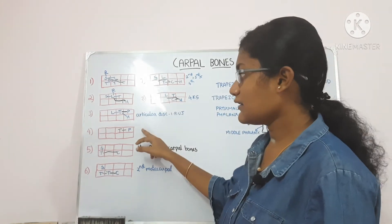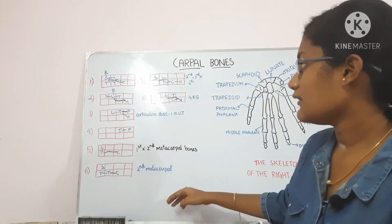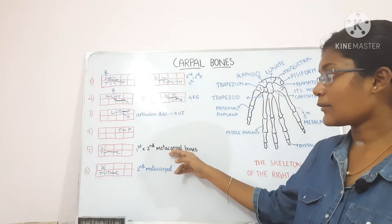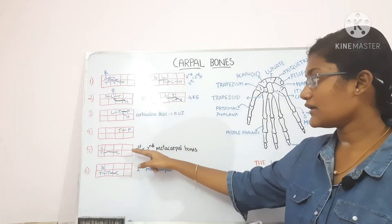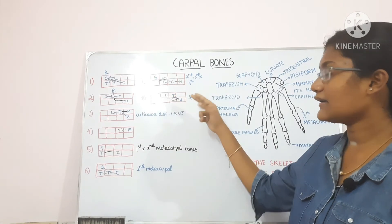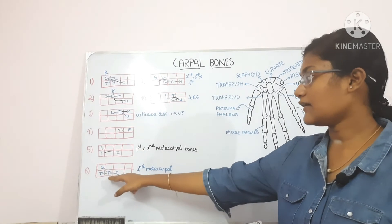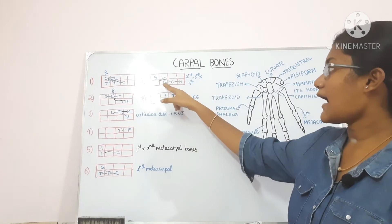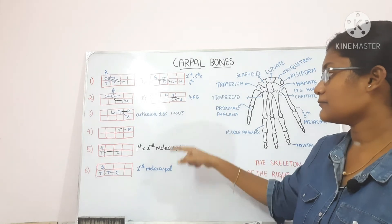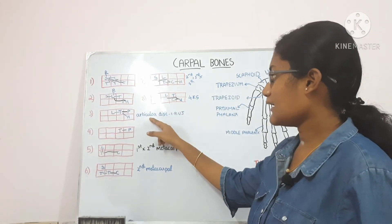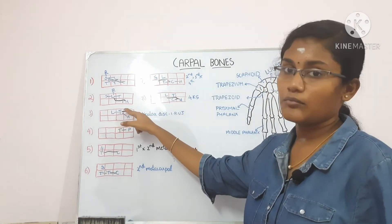The pisiform is the only bone which articulates with only one other bone — that is the triquetral. The articulation with the metacarpal bones starts from the trapezium and ends at the hamate. Trapezium articulates with the first and second metacarpal bone, trapezoid with only the second, capitate with the second, third and fourth, and hamate with the fourth and fifth. The articular disc of the inferior radioulnar joint is attached to the triquetral bone only, while the scaphoid and lunate articulate with the radius.